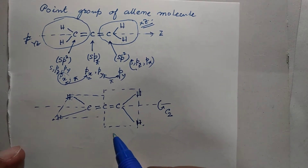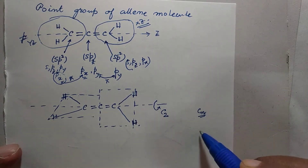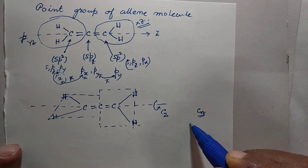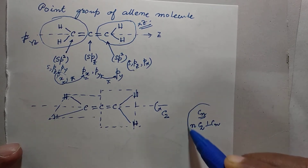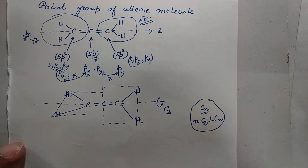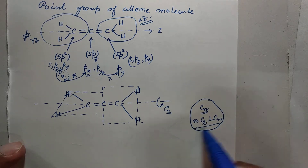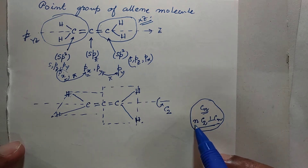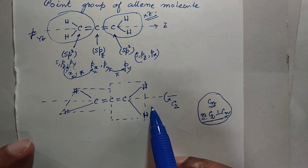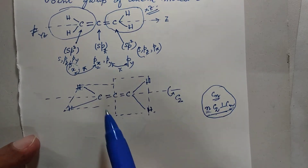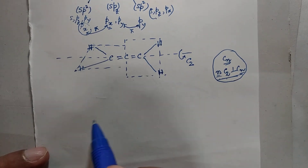Our next task is to find whether there are two more C2 axes, because once we find a CN axis, the next task is to find n number of C2 axes perpendicular to CN. In the flowchart for finding point groups, our next objective is to find whether there are n C2 axes perpendicular to CN. Here we have to find whether there are two C2 axes perpendicular to this C2 axis. The task is not easy with such a diagram, but that will be simplified if we use a box diagram.